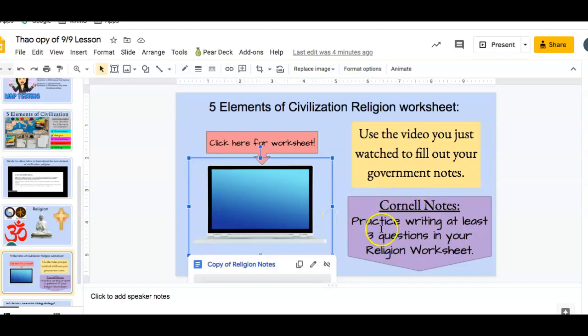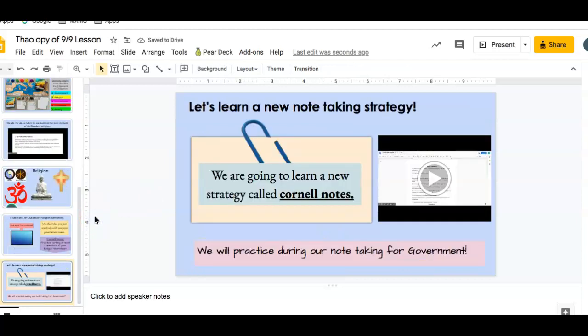As I stated, don't forget about the Cornell notes. You need to write at least three questions on your religion worksheet. And if you forgot what the Cornell notes were, watch this quick video here. Let me know if you have any questions.